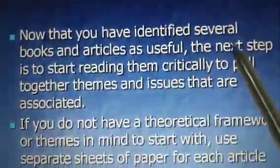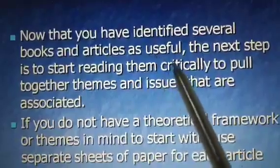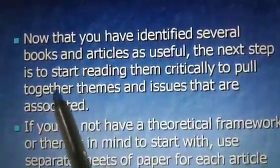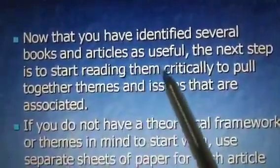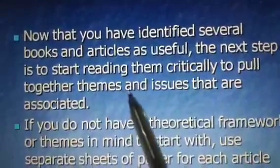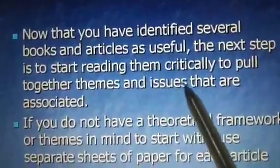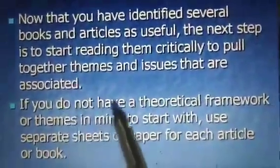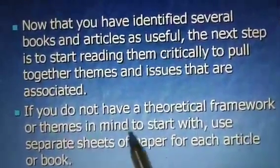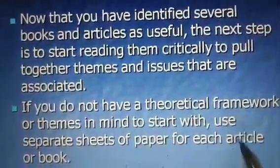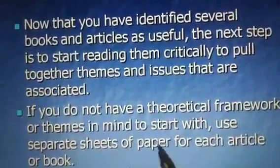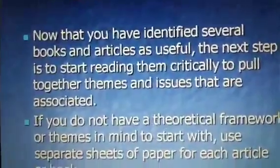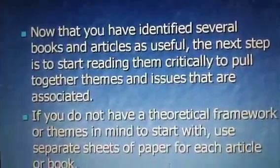The second step is to review the selected literature. Now that you have identified several books and articles as useful, the next step is to start reading them critically to pull together themes and issues that are associated. If you do not have a theoretical framework or themes in mind to start with, use separate sheets of paper for each article or book. These two practices are useful while reviewing the literature.